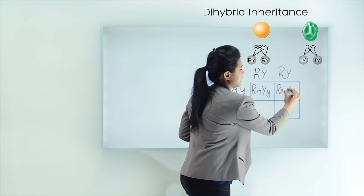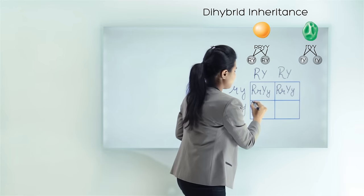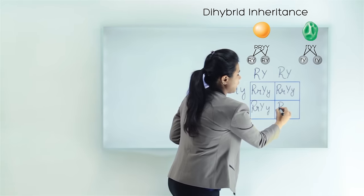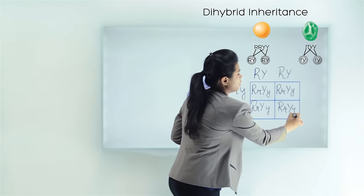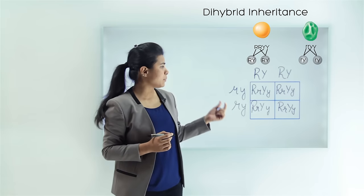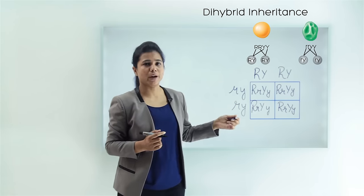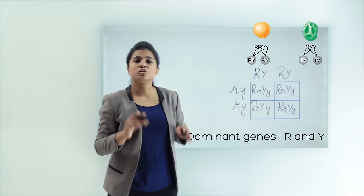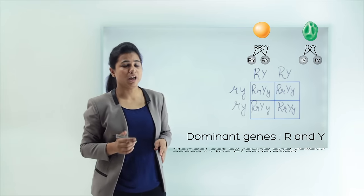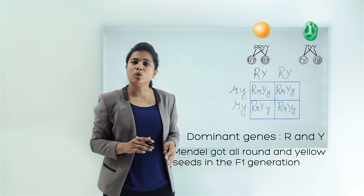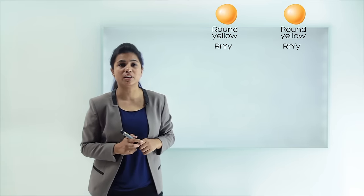All the cells in the Punnett square have the similar combination: capital R, small r, capital Y, small y. We have one dominant gene for shape (R) and one for color (Y), so all the offspring produced are round and yellow. Hence, we can conclude that Mendel got all round and yellow seeds in the F1 generation and no wrinkled green seeds were formed. He then took two plants from the F1 generation and crossed them.